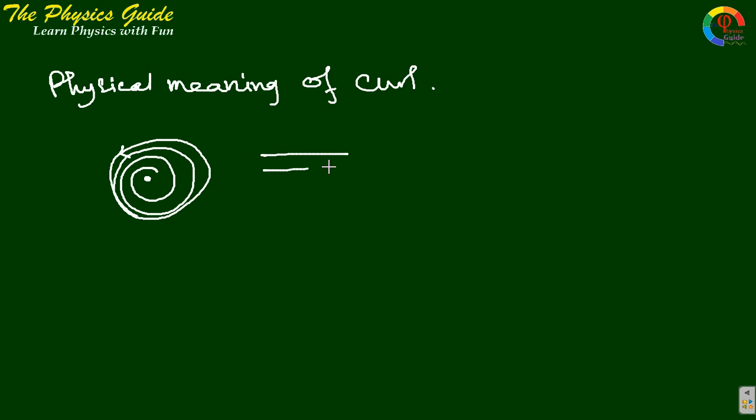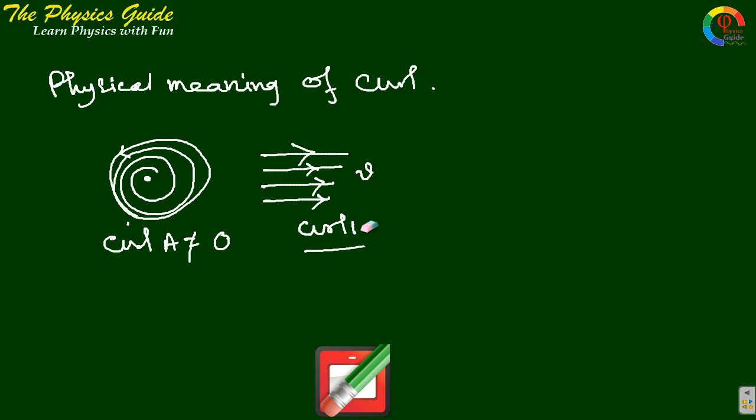Suppose this is a parallel streamline. Water is moving parallel, so we can say there is no curl. Curl v equals 0. But in this case, curl of vector A not equals to 0.